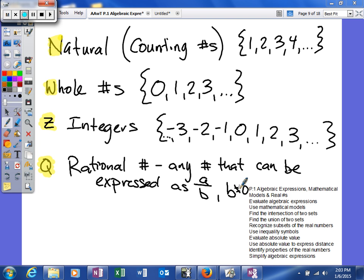Rational numbers, B cannot be equal to zero. The reason that we put that in there is because if B is equal to zero, then that's undefined. It's not a rational number.